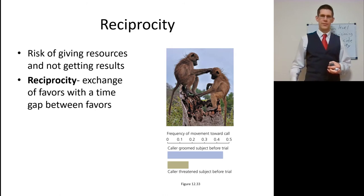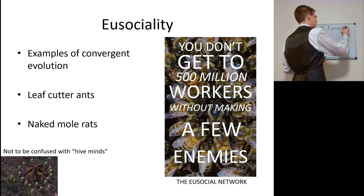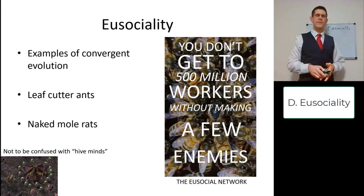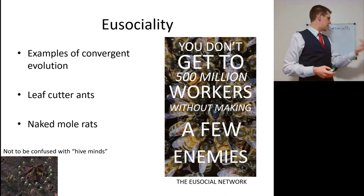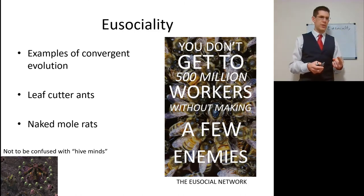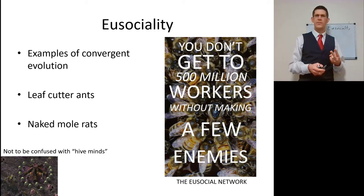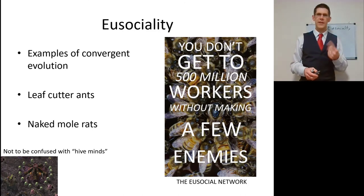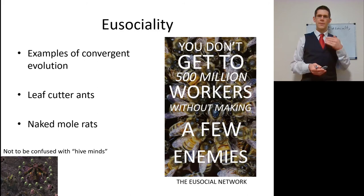Speaking of greater social interactions: eusociality. It's an example of convergent evolution, seen in wasps, ants, naked mole rats, and certain types of shrimp. Leaf cutter ants are a good example — you have multiple generations taking care of offspring and living together, cooperative care of the young, and sterile castes. Don't confuse this with hive minds where they all share psychic energy — that's not real. Each individual is still looking out for itself.